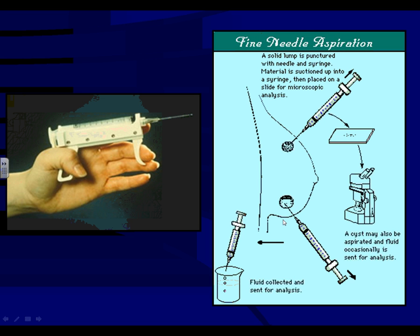If the cyst fluid is clear, serous, not cloudy or bloody, sometimes those who do the FNAs may just discard it because most of the time the fluid is benign — very rarely malignant with that kind of appearance. I don't personally recommend that. Some surgeons, if they know it's a patient with a history of fibrocystic disease and the fluid is clear and not bloody, won't be too concerned, because rarely are those ever of concern.